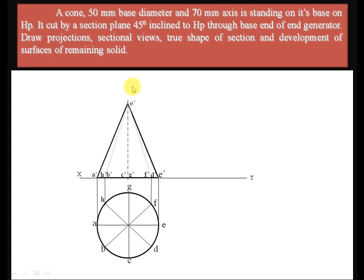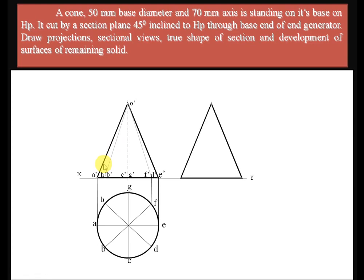Now represent the section plane, which is inclined at 45 degrees to the horizontal plane. This means it is inclined to the XY reference line. The section plane passes through the end of the end generator. In the front view, consider O'A' as the end generator. Place the protractor at point A' and represent the 45-degree inclination, then draw the section plane line.